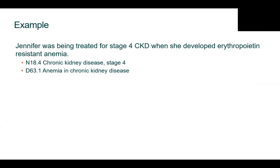We have Jennifer, who was treated for stage 4 chronic kidney disease when she developed erythropoietin-resistant anemia. In this case, we need two codes: the anemia in chronic kidney disease, and also a code for chronic kidney disease stage 4. At D63.1 in the tabular, we're going to see a code first note associated with this code, and it says code first associated underlying chronic kidney disease. So as with any of the codes in the tabular, we always want to check our instructional notes to look for any code first notes or use an additional code notes that would instruct us on our sequencing priority.